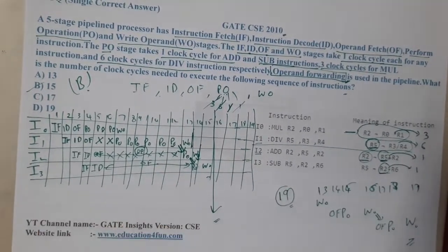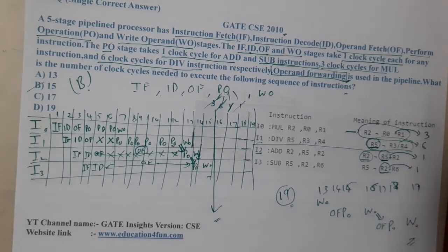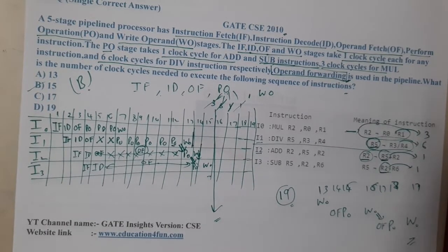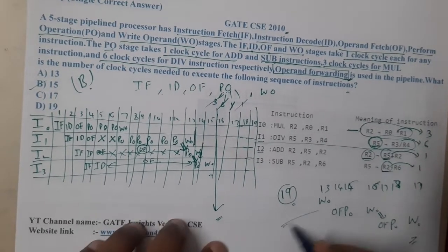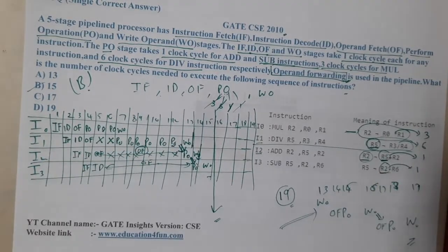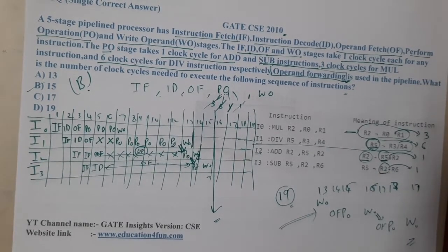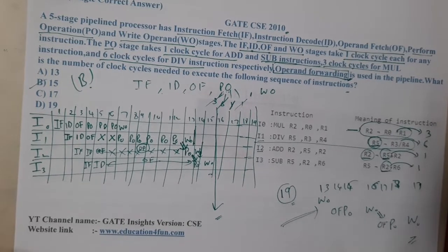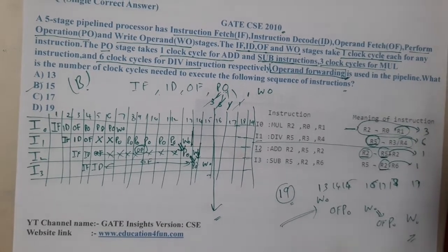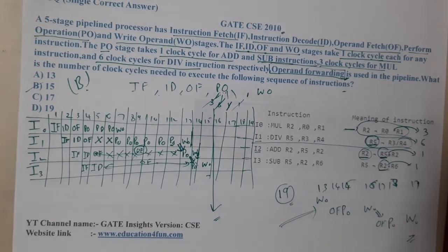Now everyone should have a clear idea of operand forwarding versus without operand forwarding. If you have any doubts, please watch the lecture on data hazards. In the next lecture, we'll continue with the next question. Thank you for watching.